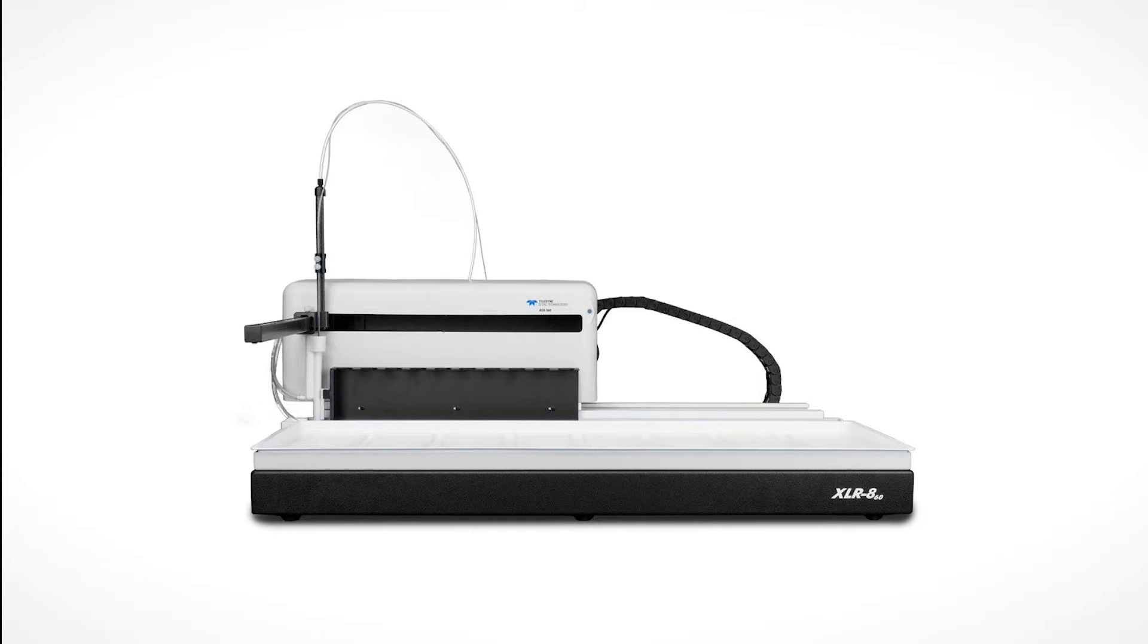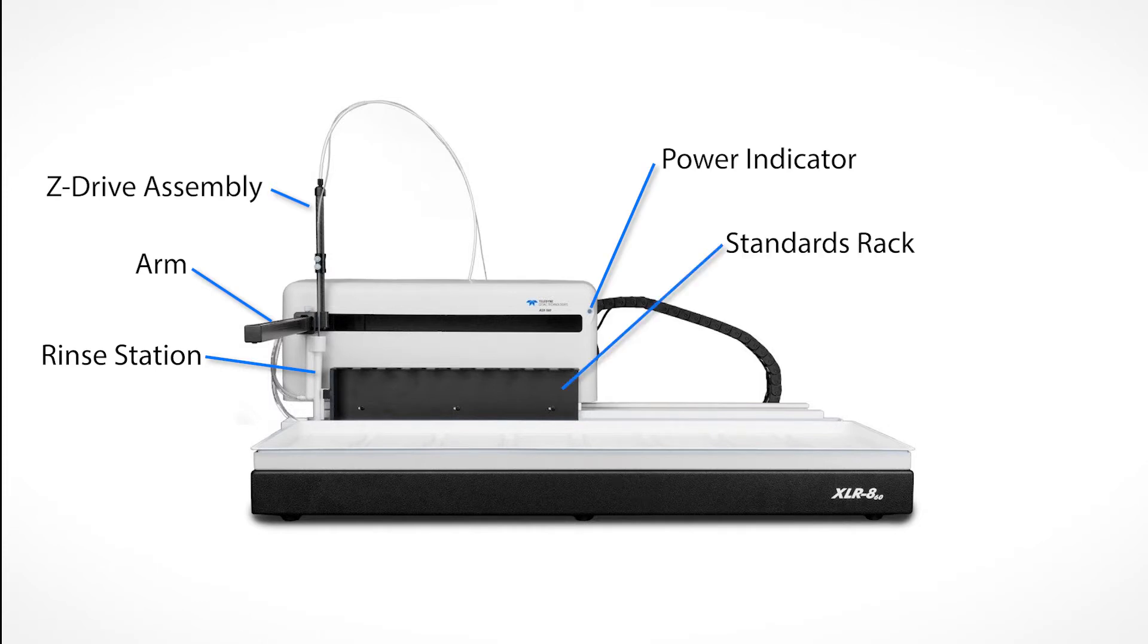The two main components of the XLR860 are the Auto Sampler head and the Auto Sampler base. In front are the Z-Drive assembly, the arm, the rinse station, the power indicator, the standards rack, the chain, and the sample tray.